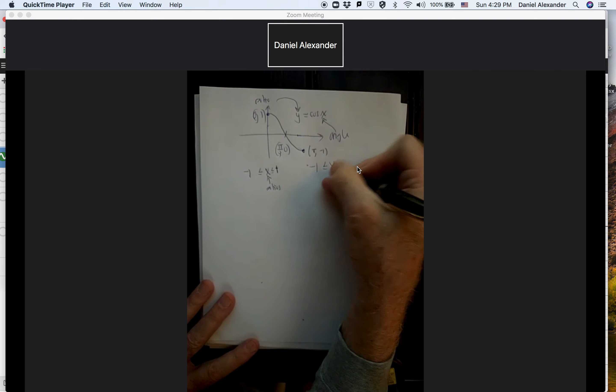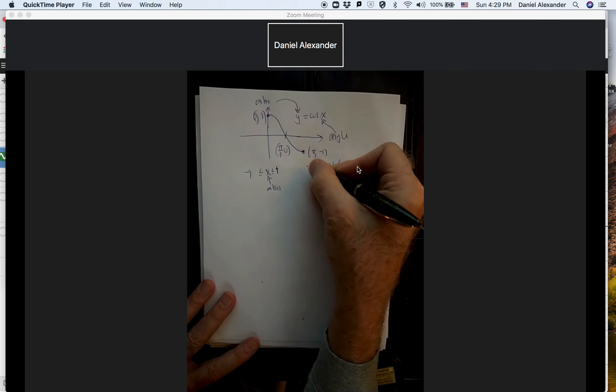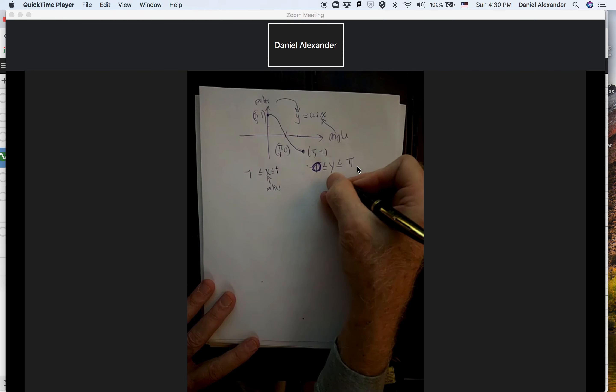That's all possible ratios. And minus one to, I'm sorry, zero and pi are the angles.